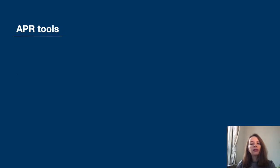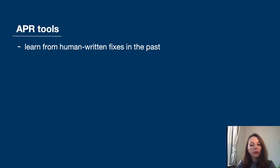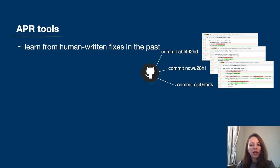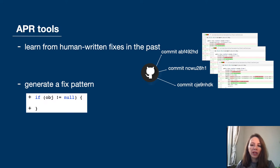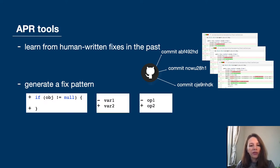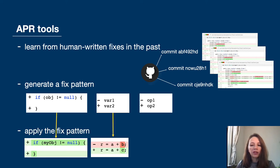How did the APR tool know how to fix your code? Many APR tools learn from the fixes written and committed to repositories in the past. APR tools generate fixed patterns out of similar fixes, and common fixed patterns are a null pointer checker or replacement of a variable or of an operator, etc. Finally, when a bug is detected an APR tool chooses a suitable fixed pattern and applies it to the buggy code.